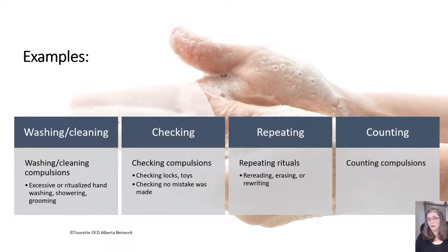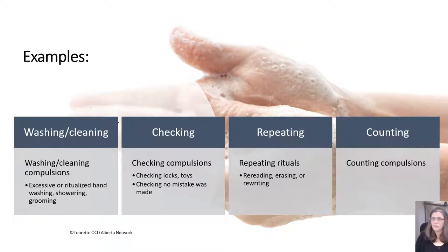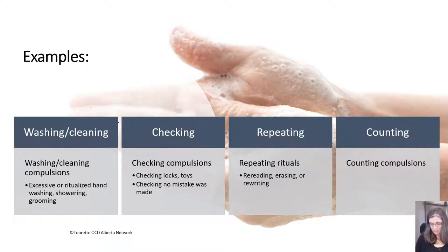Counting compulsions are very common. My oldest son had this a lot. We were in the mall when he was about six or seven and he had a meltdown when I told him he could have a treat. He said he was counting and had lost his place — he was over 2,000. I suggested he just start at 2,000, but for someone with OCD, they can't do that. They have to start at one and count up again. I didn't know about the disorder at that time, but looking back, I now understand what it was about.